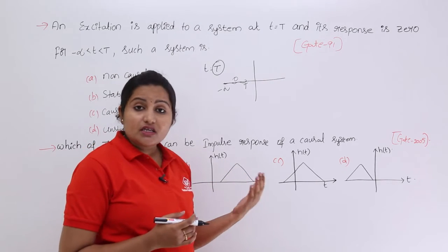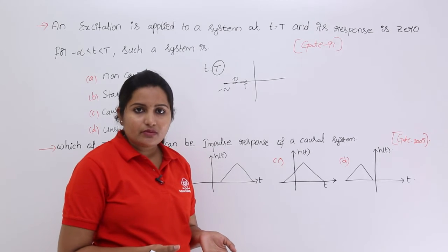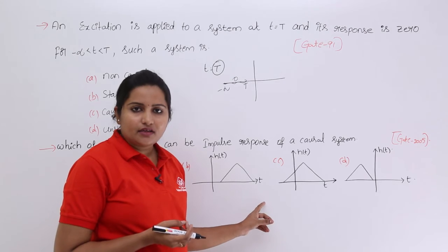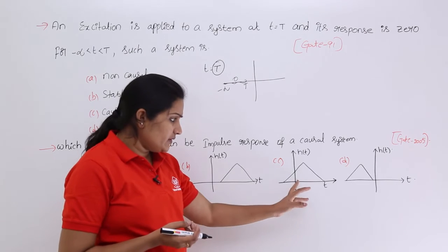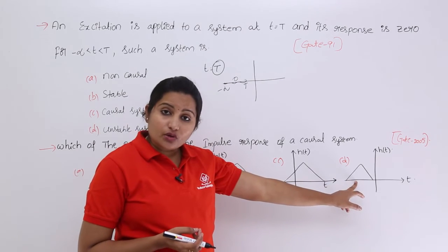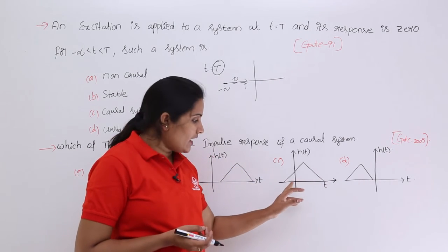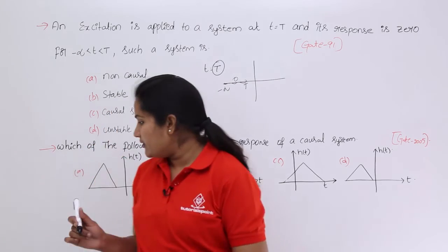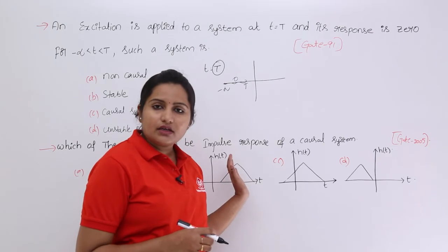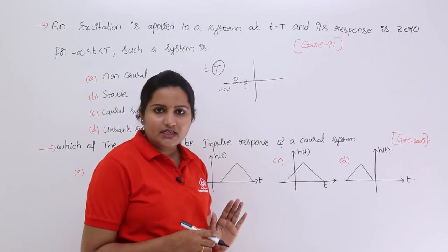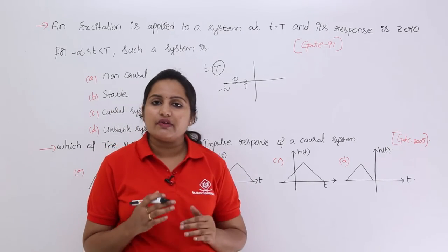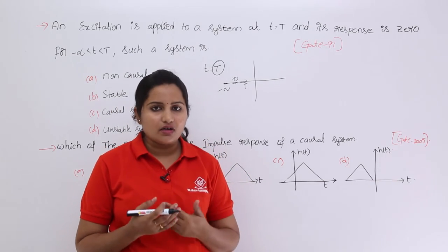For example, if the response of this system is totally right-sided, then you can say that is a causal system. If you see this signal, it has some part on the right side but also on the left side. This one is totally left-sided. Only the signal that is entirely right-sided corresponds to a causal system. This is the way we trace whether the system is causal or non-causal.